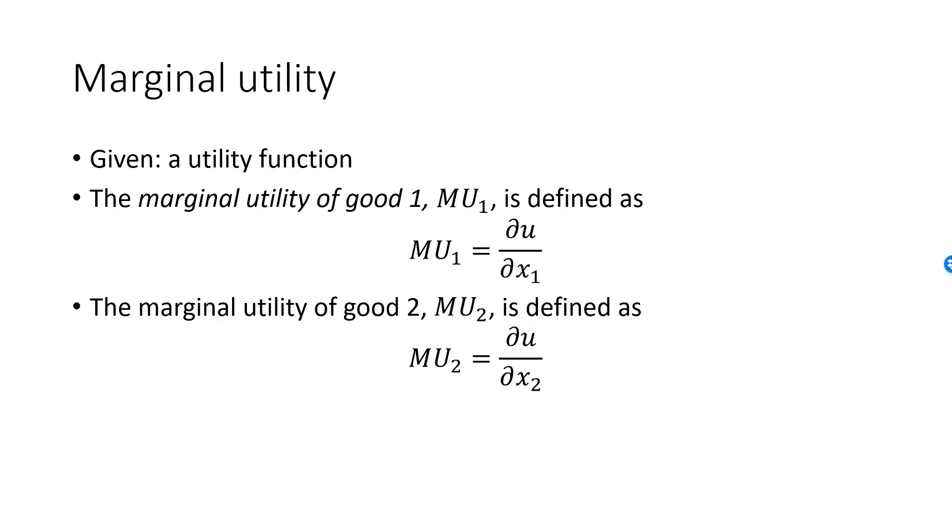Marginal utilities will themselves depend on which bundle we consider, and they will be functions of x1 and x2.